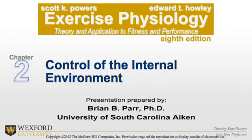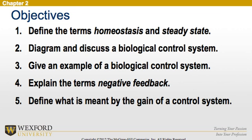Hey everyone, welcome to Advanced Exercise Physiology. This is on Chapter 2, Control of the Internal Environment. The objectives of this chapter are to define the terms homeostasis and steady state, to diagram and discuss a biological control system, as well as be able to give an example of a biological control system.